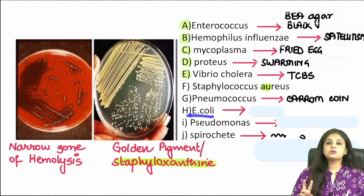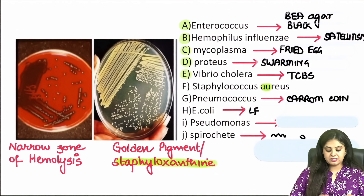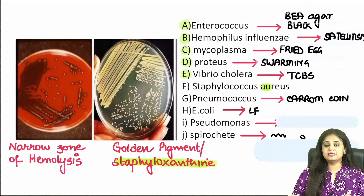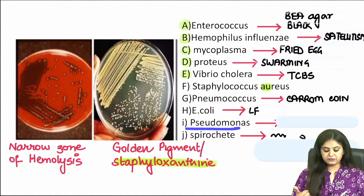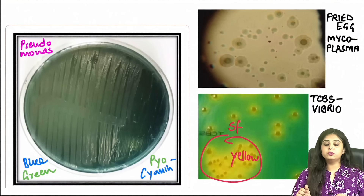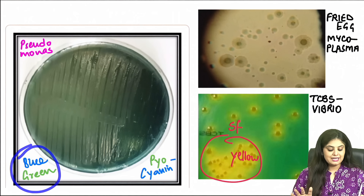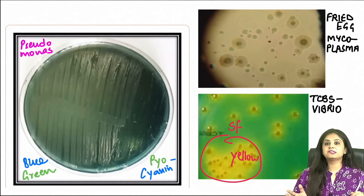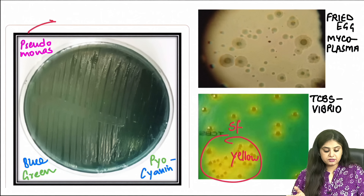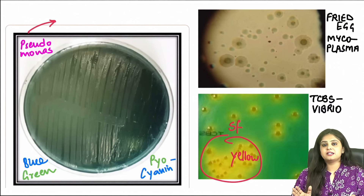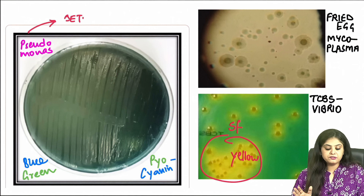E. coli — we know two organisms which are lactose fermenters: E. coli and Klebsiella. Next is Pseudomonas, always famous for its blue-green pigment; you can see on a culture media how everything has become blue-green, and the name of this pigment is Pyocyanin, which is another important question. For Pseudomonas, the selective media is Cetrimide agar, which is also a previous year question — very, very important.